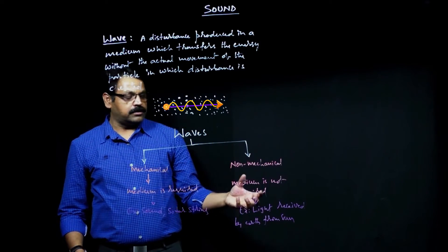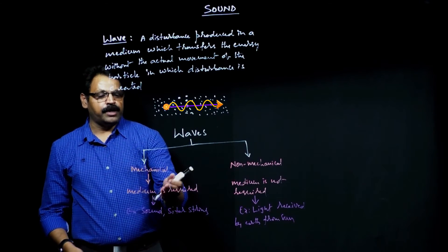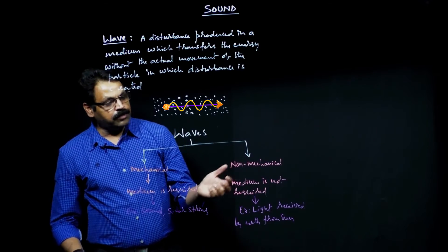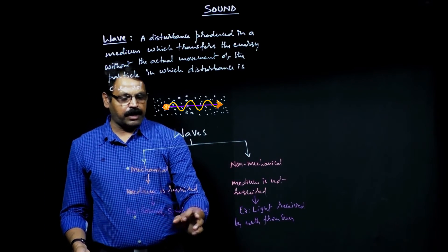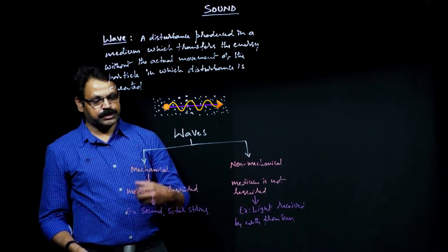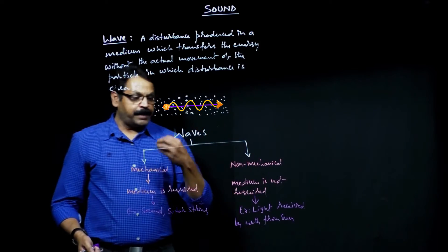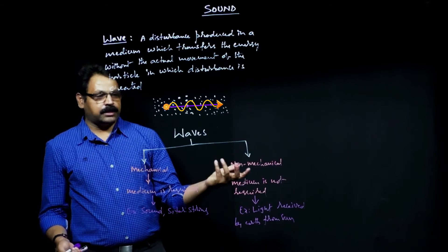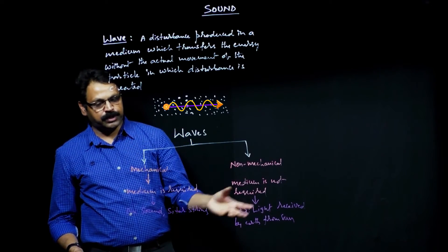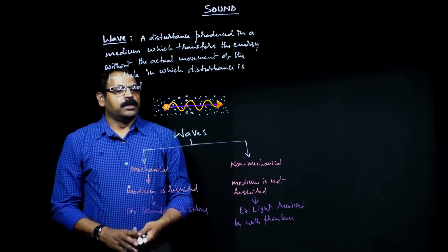Light traveling from the Sun to the Earth does not require any medium, yet transportation still takes place. In the case of mechanical waves, a medium is required. When you pluck a guitar string you hear sound — that vibration is transmitted through the medium. Sound is produced by the rubbing of vocal cords and is transported from speaker to listener through a solid, liquid, or gaseous medium. In general, sound travels through air. So sound is a mechanical wave.